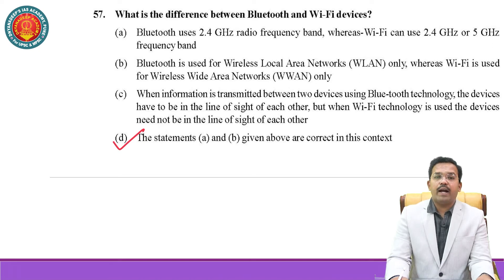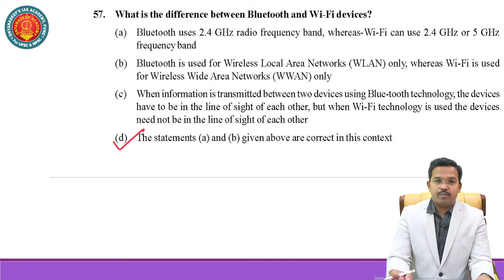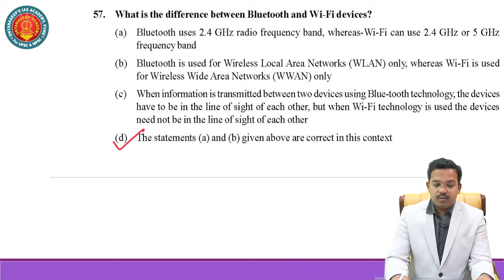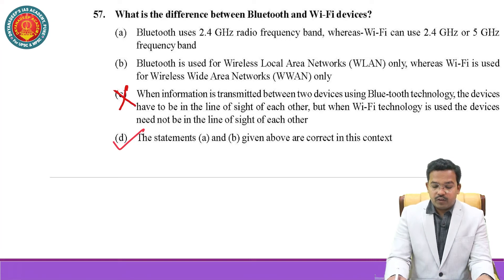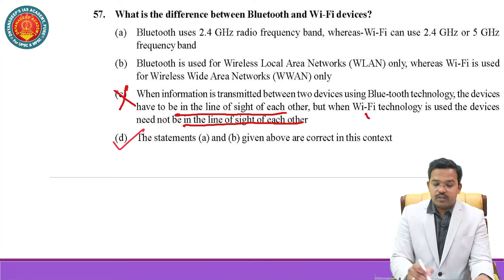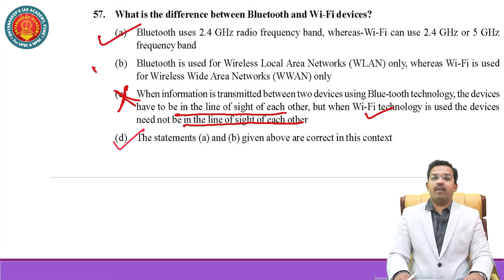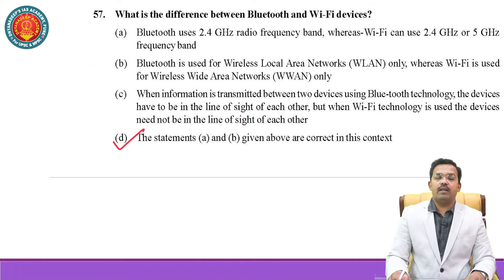Question number 57: What is the difference between Bluetooth and Wi-Fi devices? Bluetooth uses 2.4 GHz radio frequency band, whereas Wi-Fi can use either 2.4 GHz or 5 GHz frequency band — this is correct. Second, Bluetooth is used for wireless local area network only, whereas Wi-Fi is used for wireless wide area network only — both statements are correct. Third: when transmitting between two Bluetooth devices, they do not need to be in line of sight of each other — this first part is incorrect. Since option C is wrong, options A and B are automatically the correct statements.